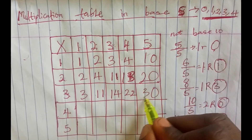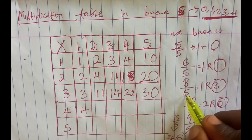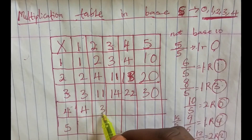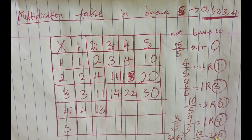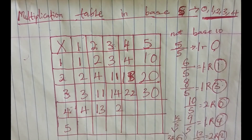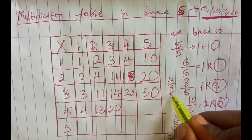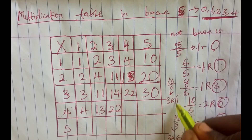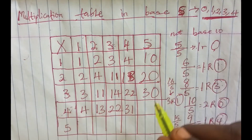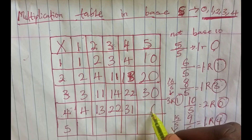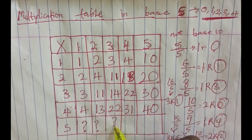For the 4 times table: 4 times 1 is 4. For 4 times 2, we get 8; 8 divided by 5 gives 1 remainder 3 — write remainder 3, bring down 1. For 4 times 3, we get 12; that gives 2 remainder 2. For 4 times 4, we get 16; 16 divided by 5 gives 3 remainder 1 — write 1, bring down the whole 3. For 4 times 5, we get 20; 20 divided by 5 gives 4 remainder 0.